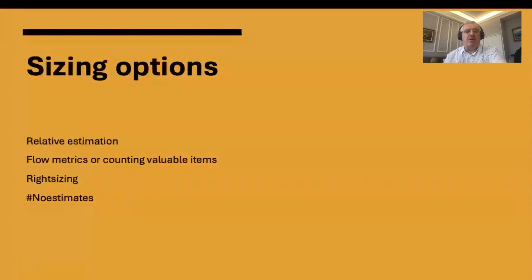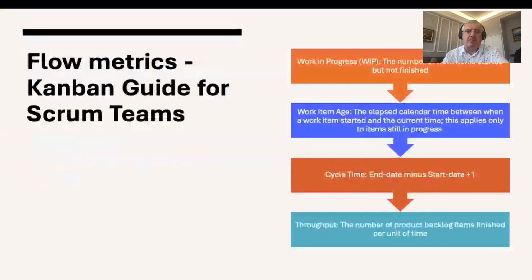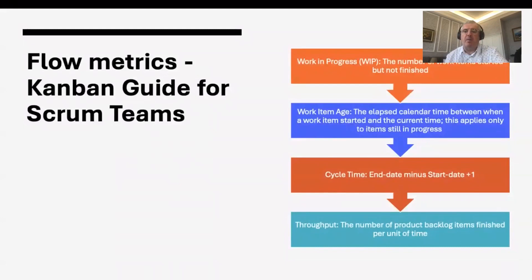Some options include relative estimation, flow metrics, counting valuable items, mixing flow metrics with item counting, right-sizing, and no estimates. In the Kanban Guide for Scrum Teams, there are four flow metrics: work in progress (items started but not finished), work item age (how old an item is since it started), cycle time (end date minus start date plus one), and throughput (the number of items delivered in a given period).